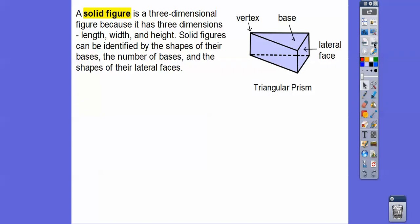It's called a prism because we have a base on top that's congruent to the same base on the bottom. Can you see this triangle on top? This triangle is a base, and the same figure is on the bottom — that's why it's called a prism. Solid figures can be identified by the shapes of their bases and the number of their bases.